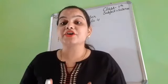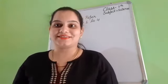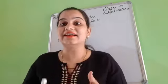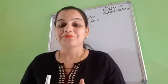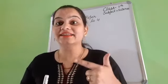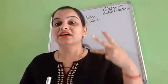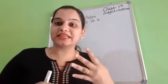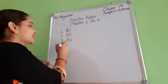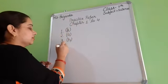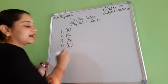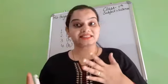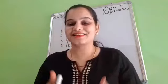Next question: the SI unit of temperature — temperature ki SI unit, yanne ki standard international unit, kaunsi hai? First option is Fahrenheit. Second option is Kelvin. Third option is Celsius. And fourth option is none of these. Which one is correct? Yes, Kelvin. Kelvin is the correct answer. SI unit of temperature? Yes, Kelvin.